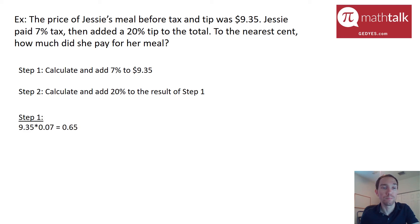So step one, figuring out 7% of 9.35. In previous videos I've said that the word 'of' in math means multiply so I'm going to take $9.35 and multiply it by 7% and one way to write 7% is 0.07. So using my calculator 9.35 times 0.07 is going to get me 0.65, so that's what 7% of 9.35 is.